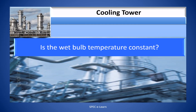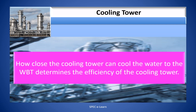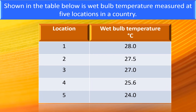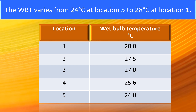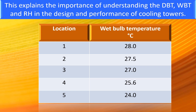Is the wet bulb temperature constant? The WBT at a particular location will remain constant for a reasonable period of time, although over the year it may vary due to seasonal factors. How close the cooling tower can cool the water to the WBT determines the efficiency of the tower. Shown in the table is WBT measured at 5 locations, varying from 24°C at location 5 to 28°C at location 1. A cooling tower designed for location 1 cannot perform the same at location 5. This explains the importance of understanding DBT, WBT, and RH in the design and performance of cooling towers.